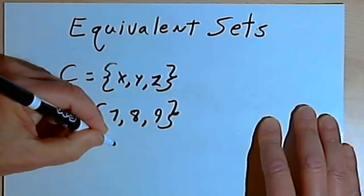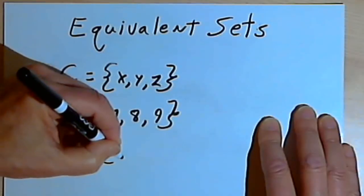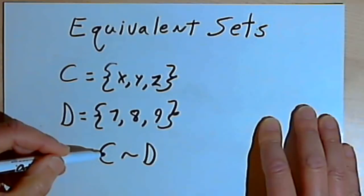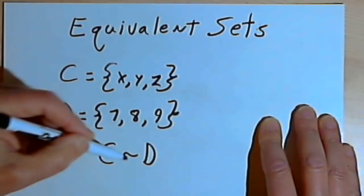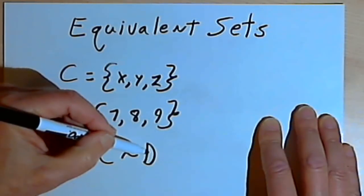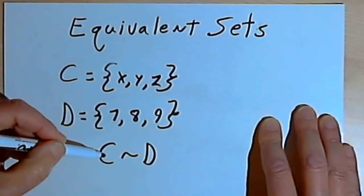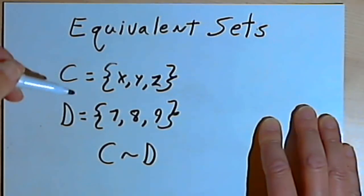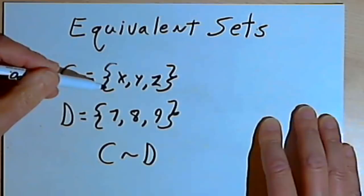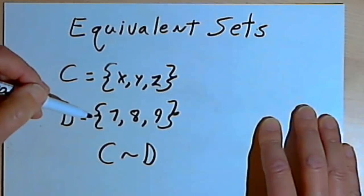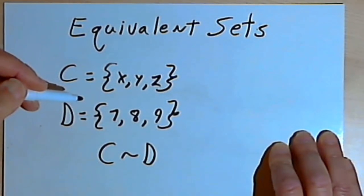And we write that set C is equivalent to set D, with a capital C, and then this squiggly mark — a tilde — and then a capital D. Set C is equivalent to set D. Now when two sets are equivalent to each other, we can also say that they have a one-to-one correspondence to each other.